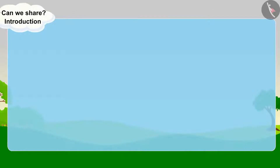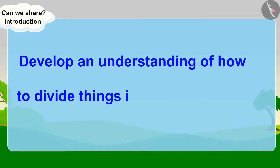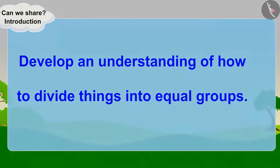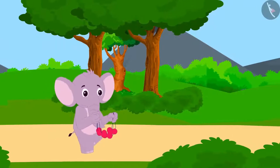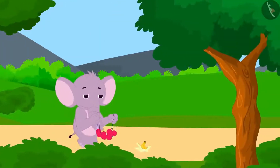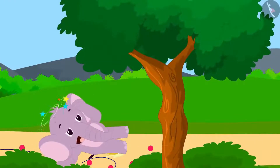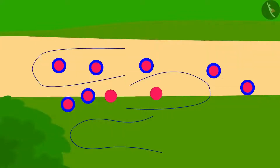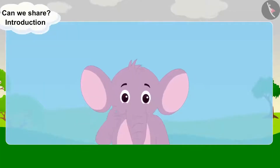In this lesson, we will develop an understanding of how to divide things into equal groups. Who is this? It's Appu the elephant. He is bringing three necklaces for Shere Khan as a birthday gift.